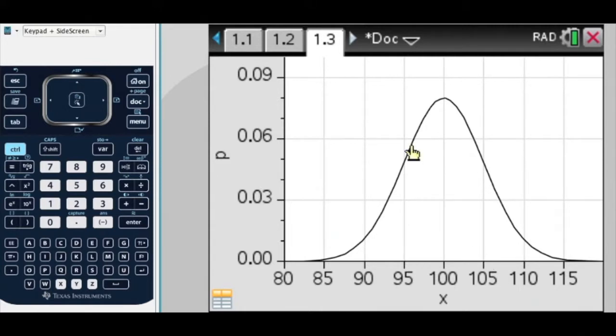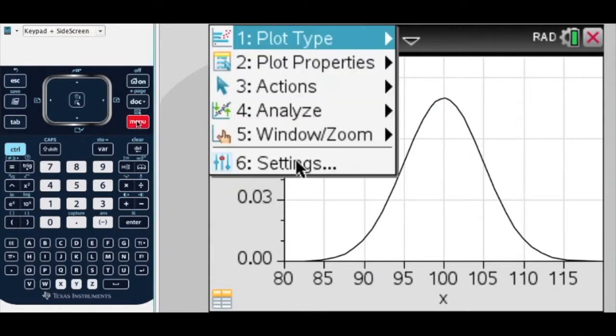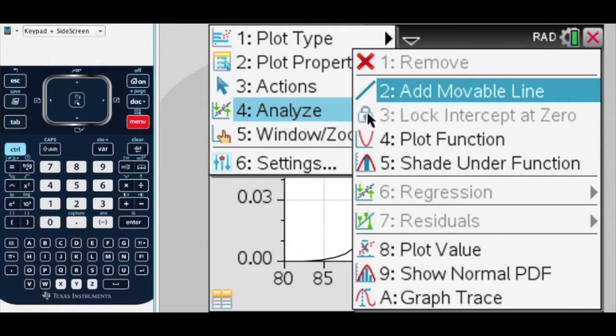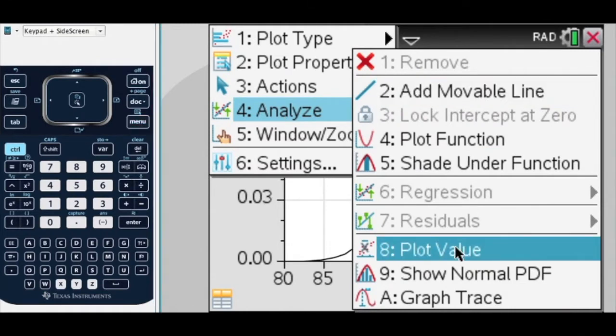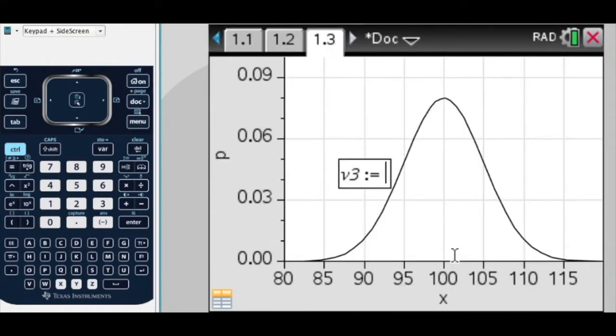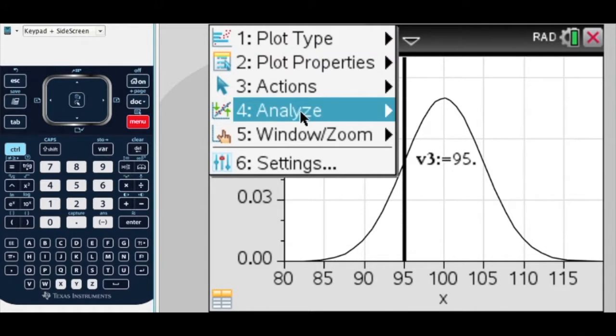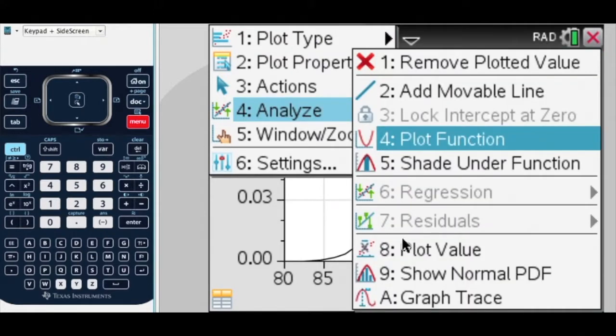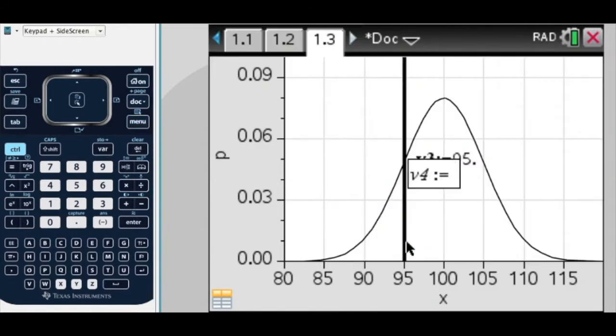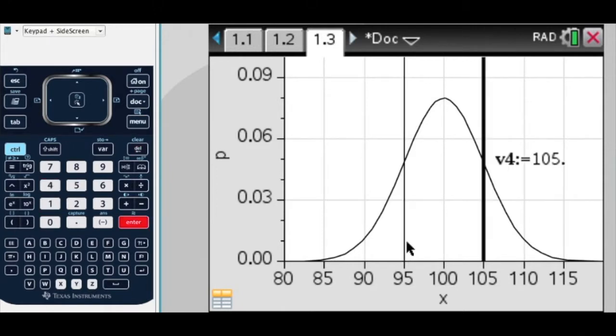So, what we do is, I'm going to graph a vertical line at 95 and 105. So, I press menu, analyze, and I plot a value now. And my first value is going to be at 95. And there's my vertical line. And then menu, analyze, plot value, 105. And there it is.